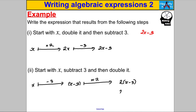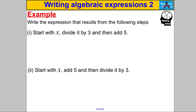These two expressions are very different from each other. In the first case we are doubling X and then taking away 3. In the second case we are taking away the 3 and then doubling the whole thing by 2. That's why we need the brackets — it's really important that you see the difference between those two.